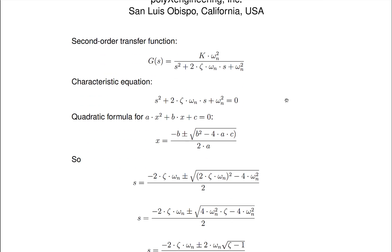So a second-order transfer function is given here and this is standard. We have actually three parameters that characterize the second-order system: the steady-state gain which is K, the natural frequency which is omega n, and then zeta which is the damping ratio.